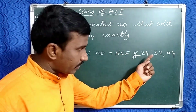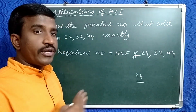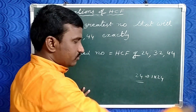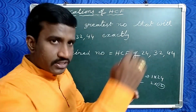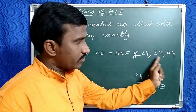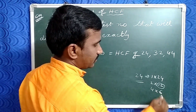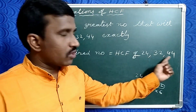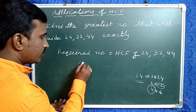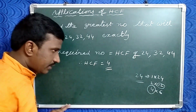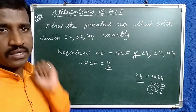Now, 24 is not a factor of the remaining numbers 32 and 44. Factors of 24: 1×24 — 24 is not a factor of 32 and 44. Next factor: 2×12 — 12 is also not a factor of 32 and 44. Next: 4×6 — 6 is also not a factor of 32 and 44. Now, 4 is a factor of 32 and 44. That's why HCF will be 4. Therefore, HCF of the given numbers equals 4, so the required answer is 4. Thus 4 divides 24, 32, and 44 exactly.